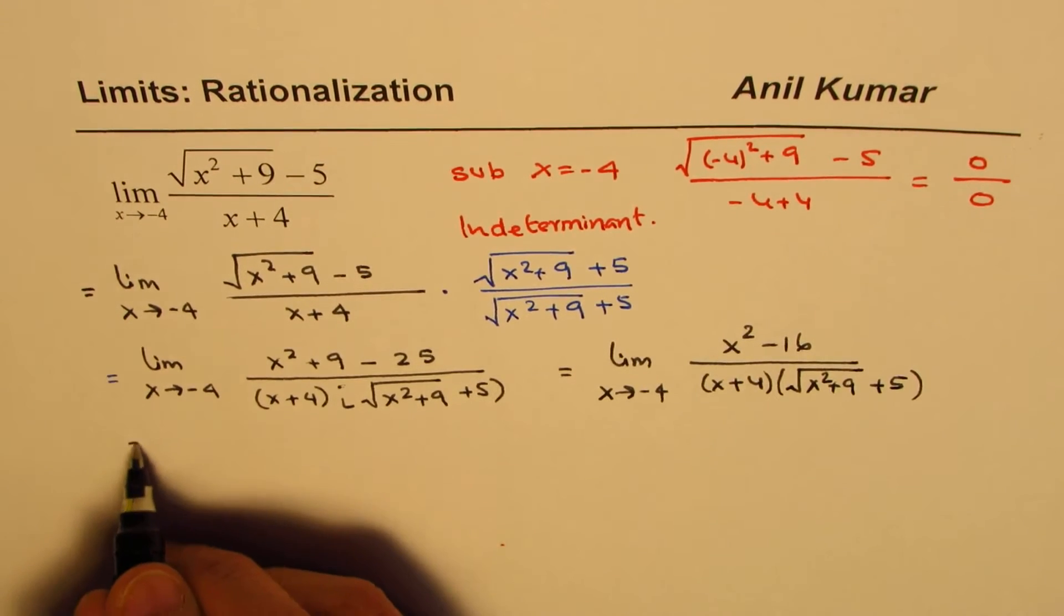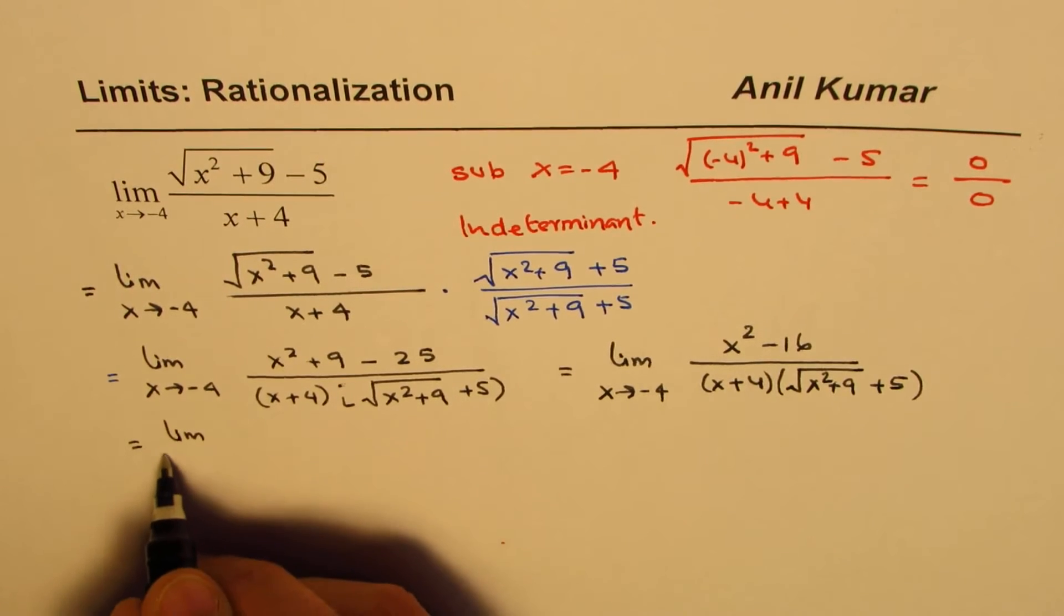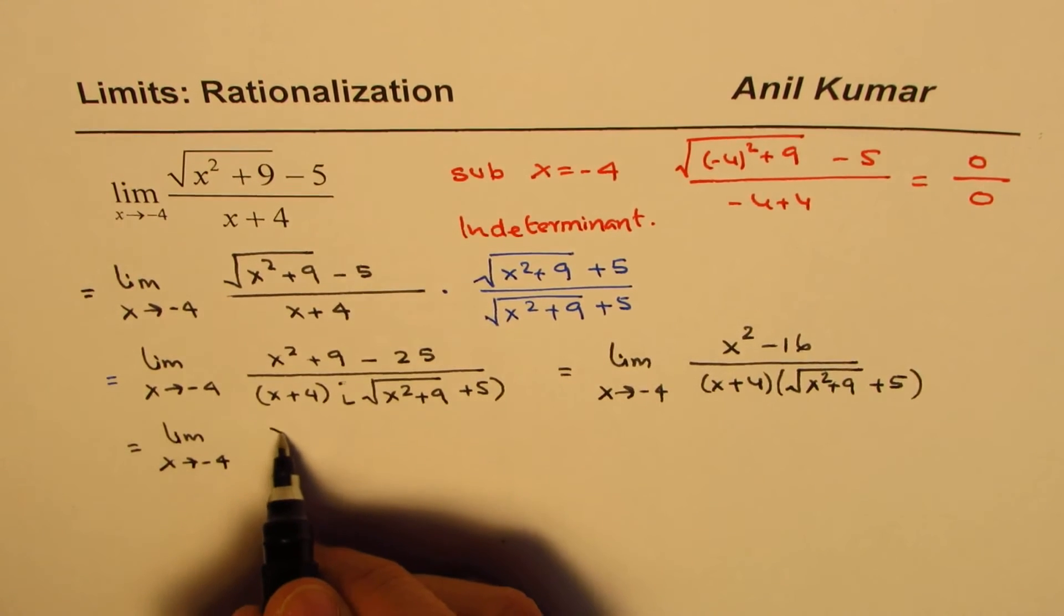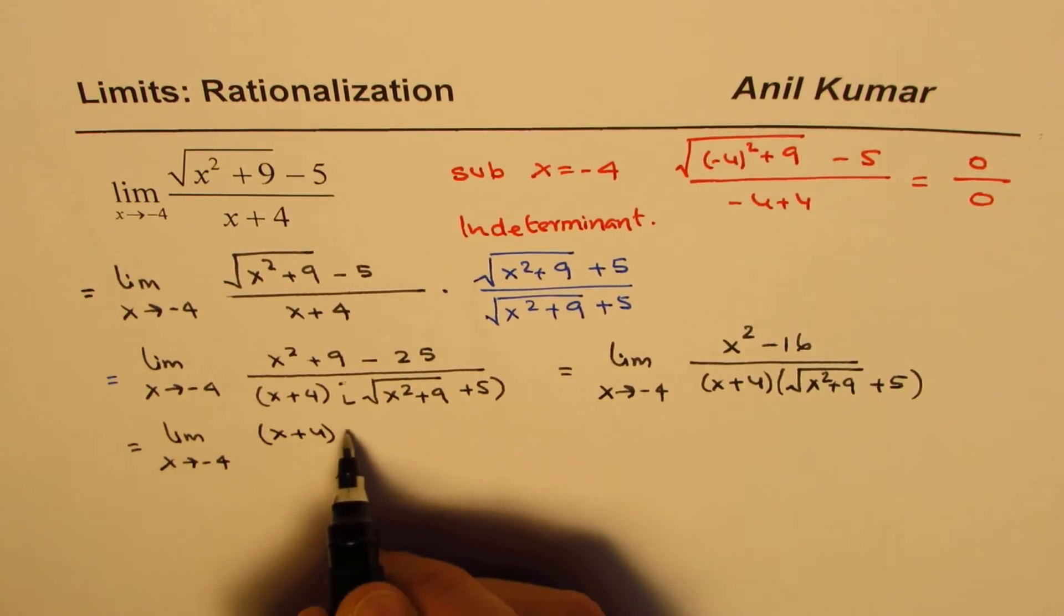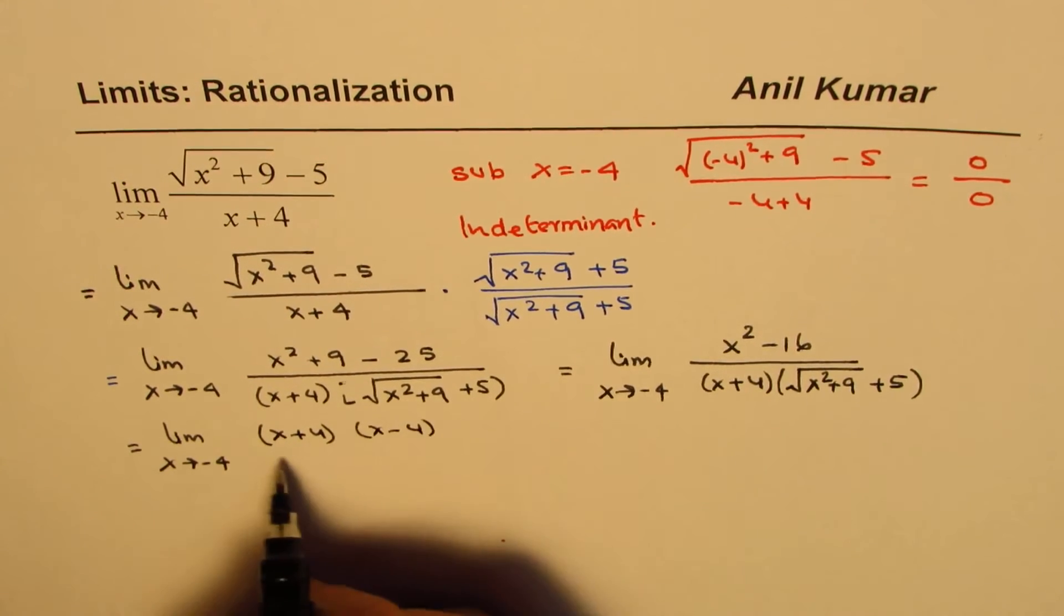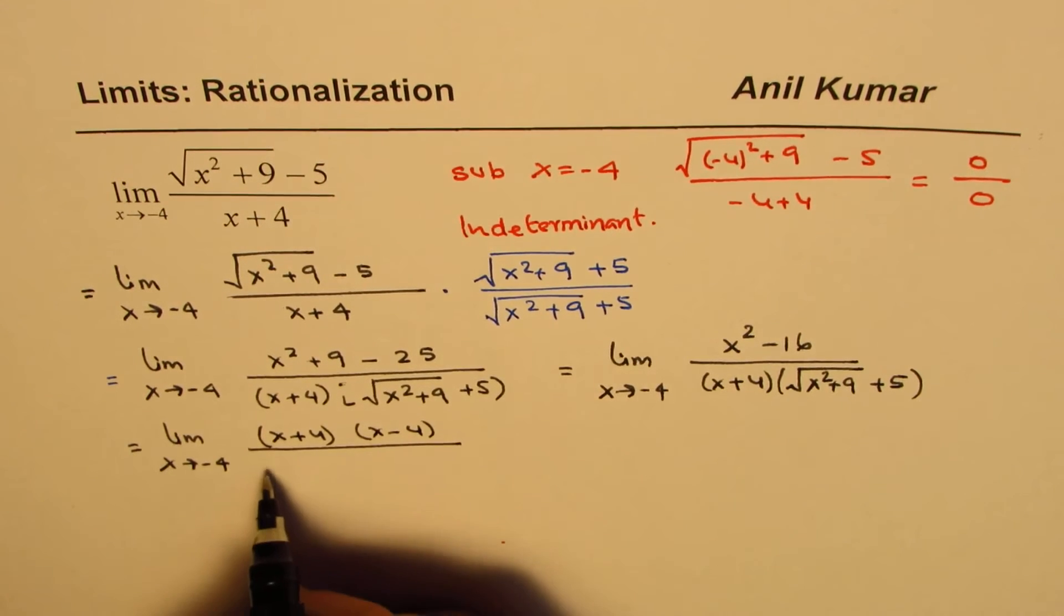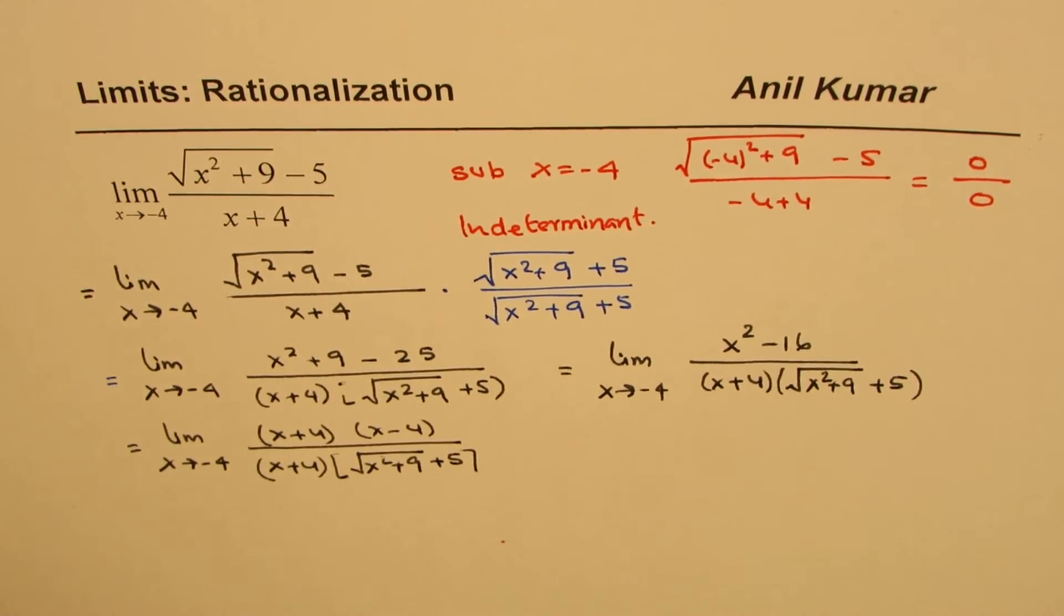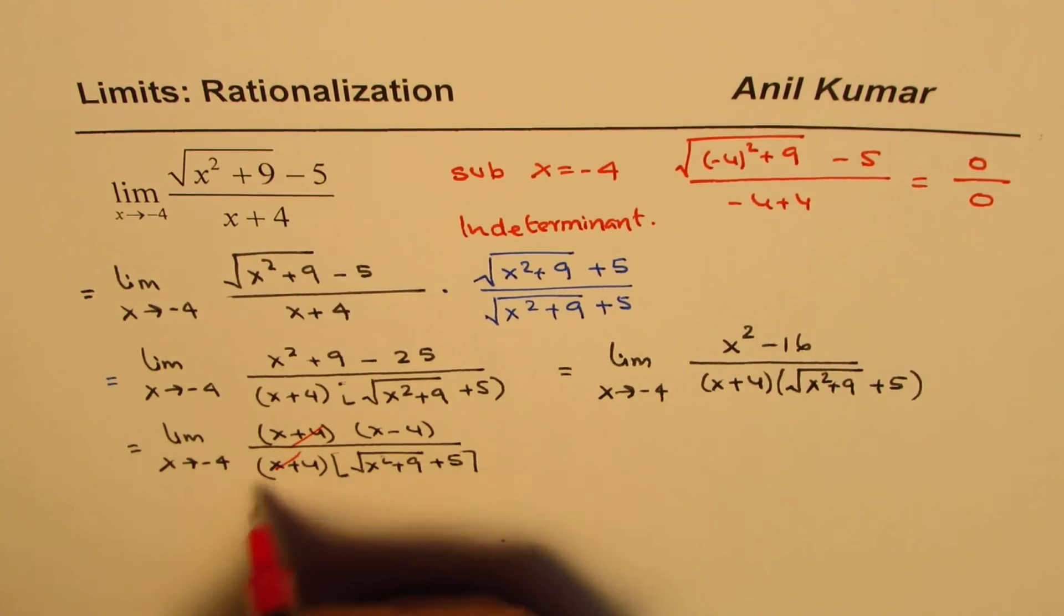So limit as x approaches minus 4. The numerator factors as (x+4)(x-4). The denominator is (x+4) times √(x²+9) plus 5. Now we can cancel x plus 4 from numerator and denominator.